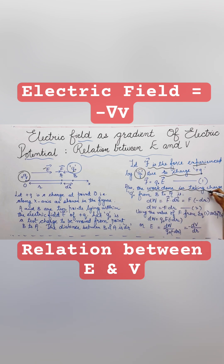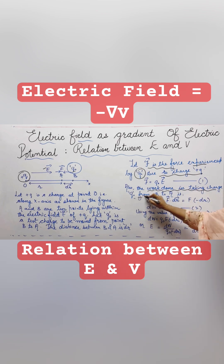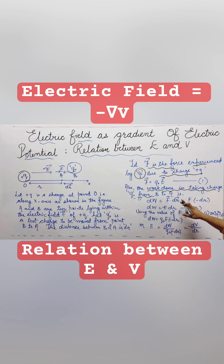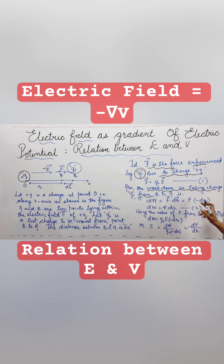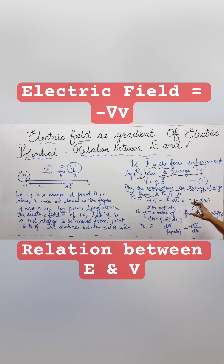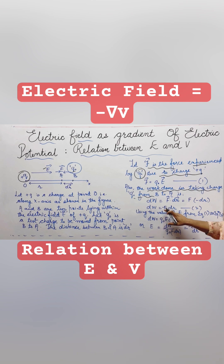In the second part, we find the work done in taking the charge Q0 from point B to A. This is given by the dot product of force and displacement. Since the displacement is in the opposite direction of the force, it is denoted by minus dr, or the angle between the two is 180 degrees. So the work done is equal to minus force into displacement.